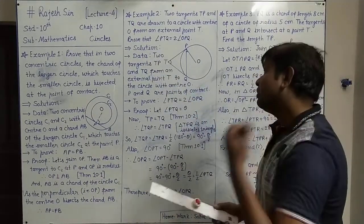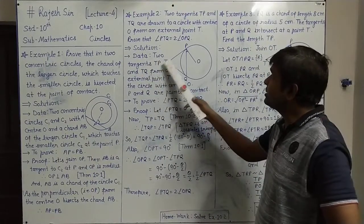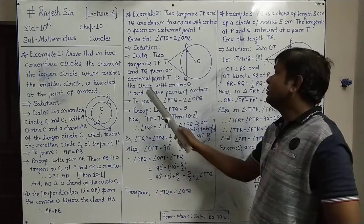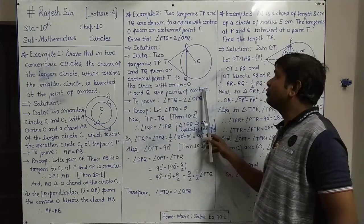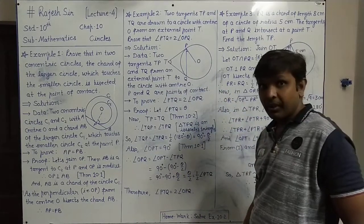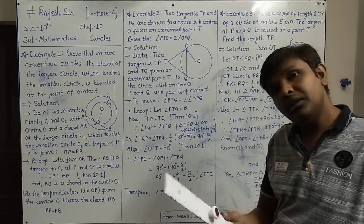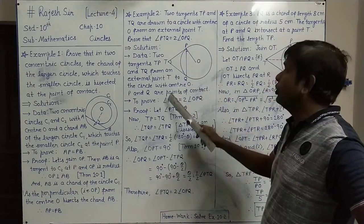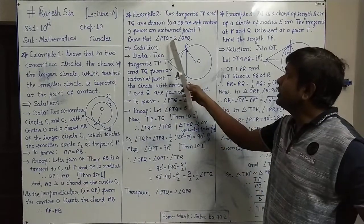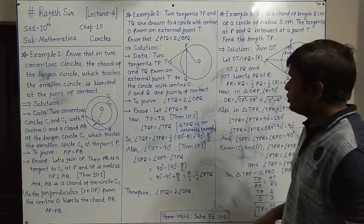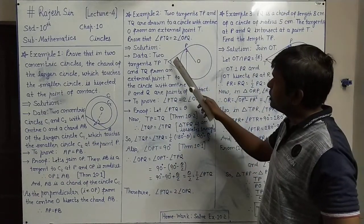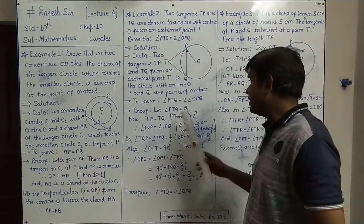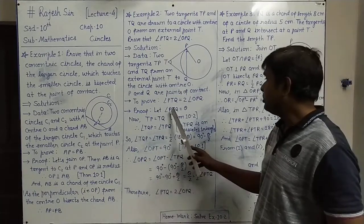In the solution, given: two tangents TP and TQ from external point T to the circle with center O. P and Q are points of contact. To prove: angle PTQ equals 2 times angle OPQ. Let angle PTQ equal theta.